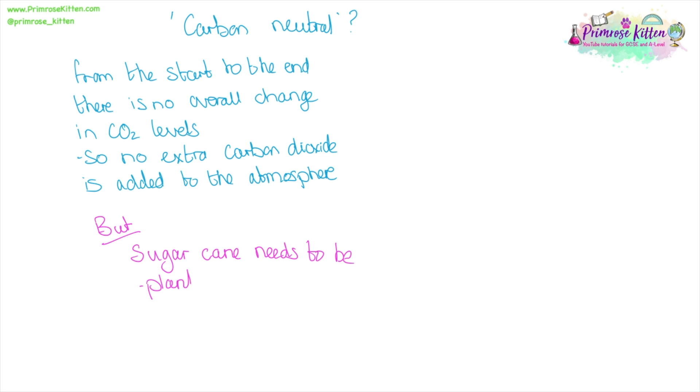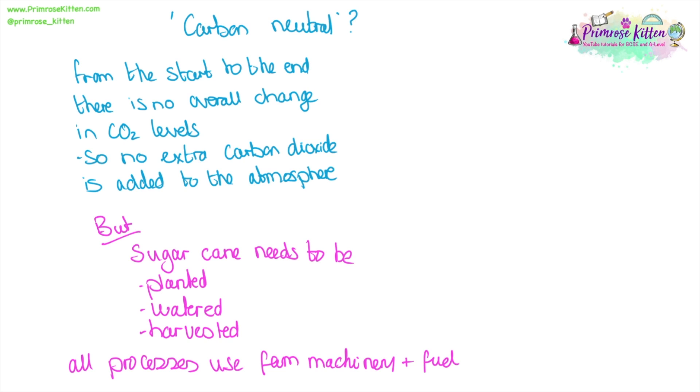The sugar cane that is fermented needs to be planted, it needs to be watered, it needs to be looked after by farmers, and eventually it needs to be harvested. All of these processes are probably going to be done by tractors, by farm machinery, and farm machinery use fuels, probably the petrol that the bioethanol is trying to replace.